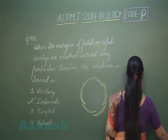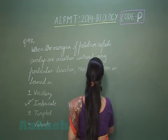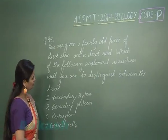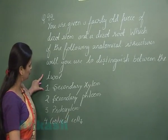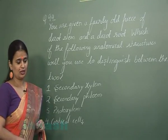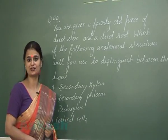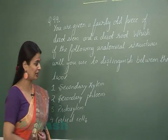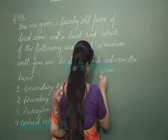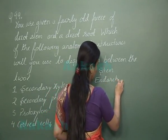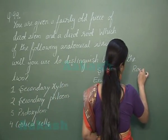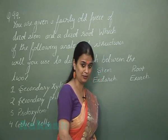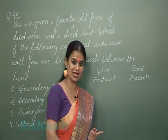Question number 99: You are given a fairly old piece of dicot stem and a root. Which anatomical feature will you use to distinguish between the two? One major difference is with respect to the position of proto and meta xylem. In the stem the condition is known as endarch xylem, and in root there is presence of exarch xylem.